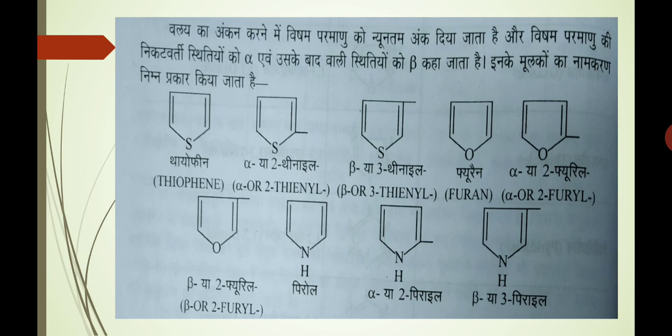Isi prakar se jo beta position wale atom se yadi hum hydrogen atom nikaalte hain, usko hum beta-thienyl ya 3-thienyl bolenge. Isi prakar se furan aur pyrrole mein bhi jo unse banne wale moolak hain unka naamkaran karenge. Jaise beta position se ek hydrogen atom remove kiya, to jo radical mila usko hum beta ya 3-furyl bolenge. Isi prakar pyrrole mein alpha position se remove karne par 2-pyrrolyl aur beta position se 3-pyrrolyl milega.